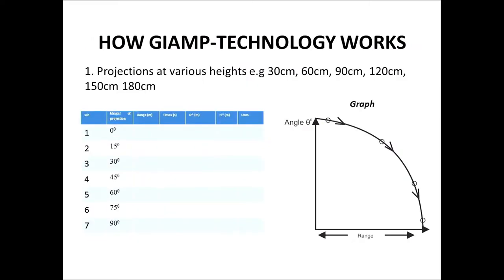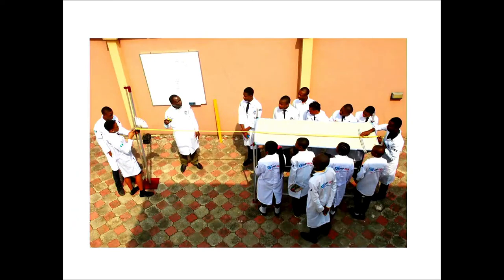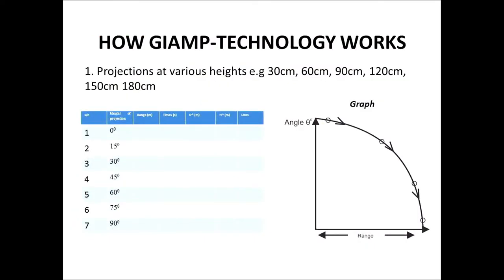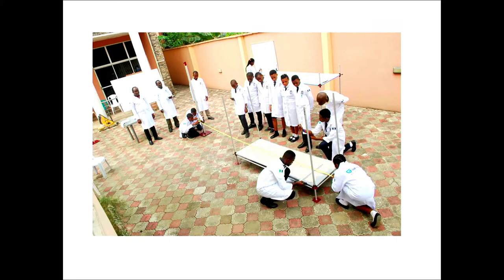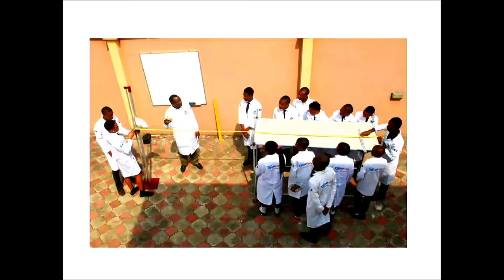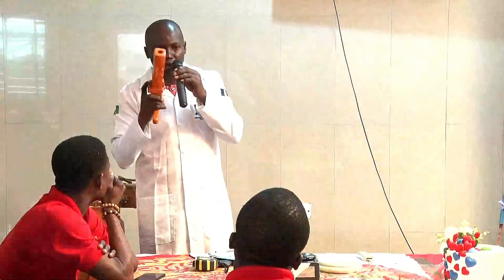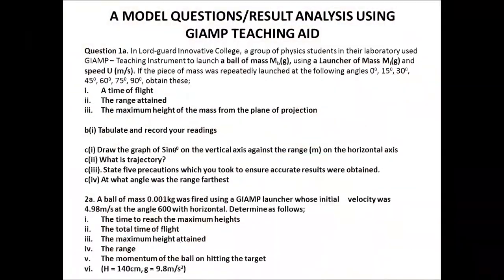In the table of values, the angles are given but you as a student must determine the velocity, which is constant. To determine it, keep the launcher horizontal, count down five, four, three, two, one, zero, launch it, measure the distance the ball traveled, and divide distance by time — that gives you the velocity. For example, if the velocity is 5 m/s here in Lagos, it is the same everywhere. Next year they may say to use a launcher of 7.5 m/s, so you anchor and measure it.